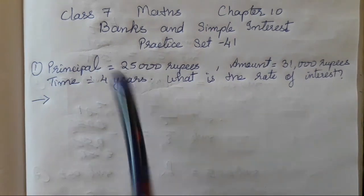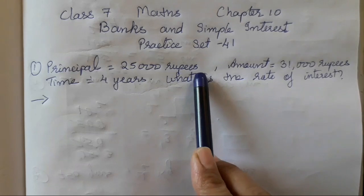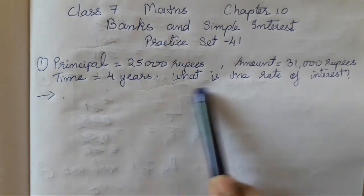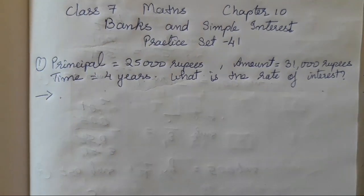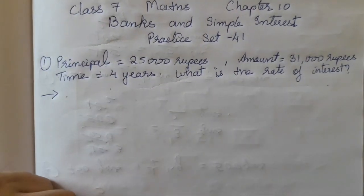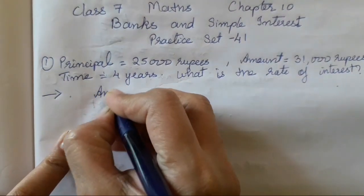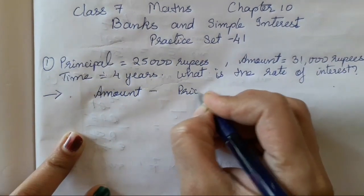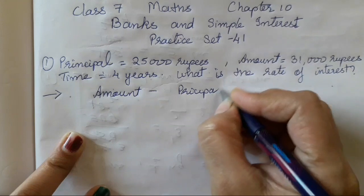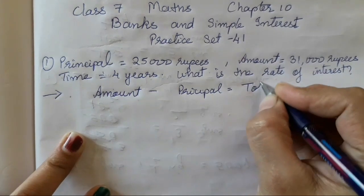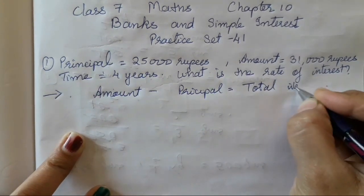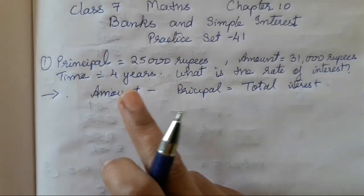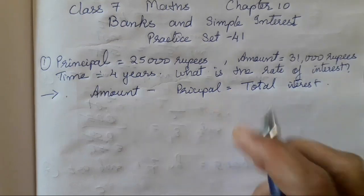So let's start. When principal is given 25,000 rupees, amount is 31,000 rupees, time is 4 years — what is the rate of interest? So for this, first we have to find the interest. Amount minus principal is equal to total interest. So this is the formula for total interest, that is amount minus principal.